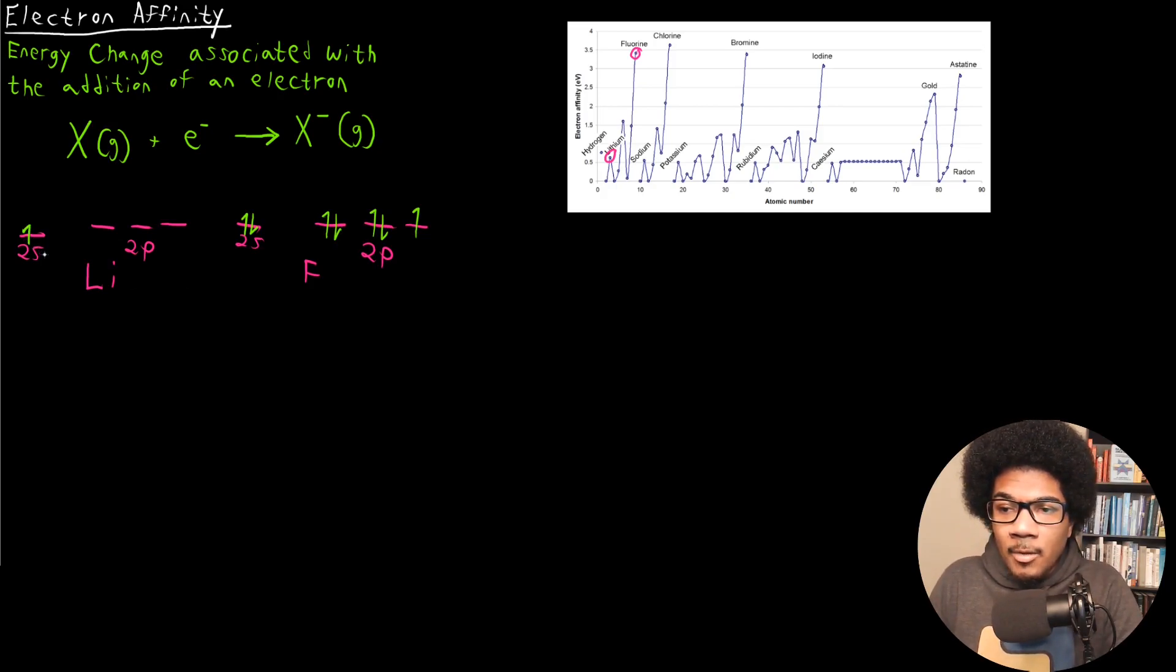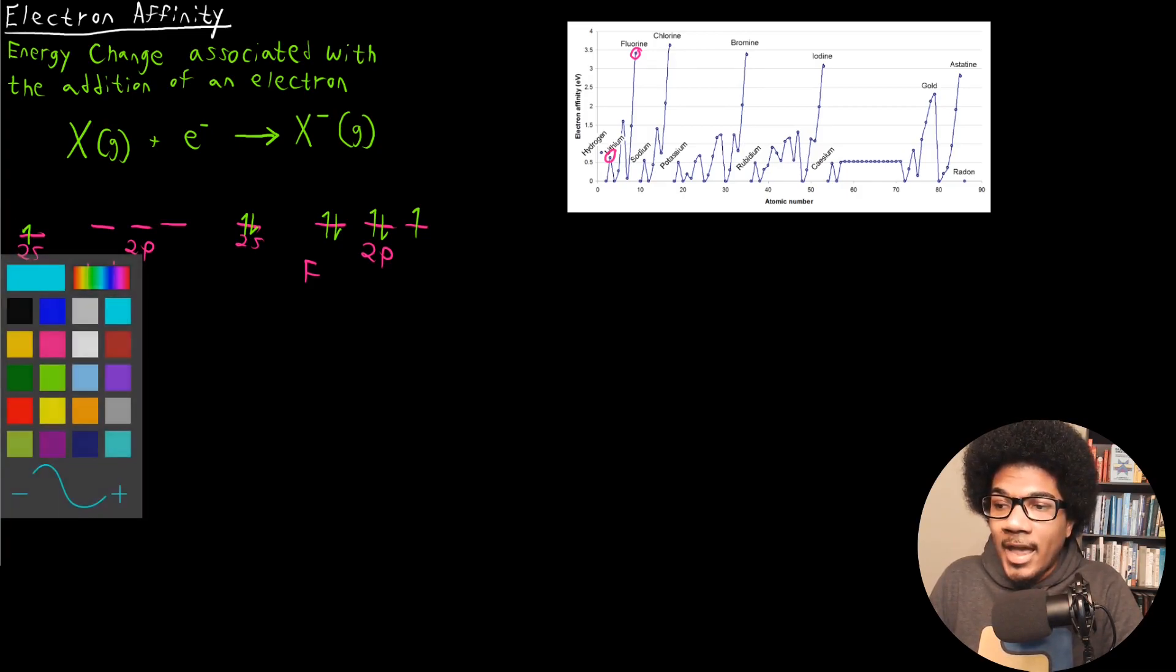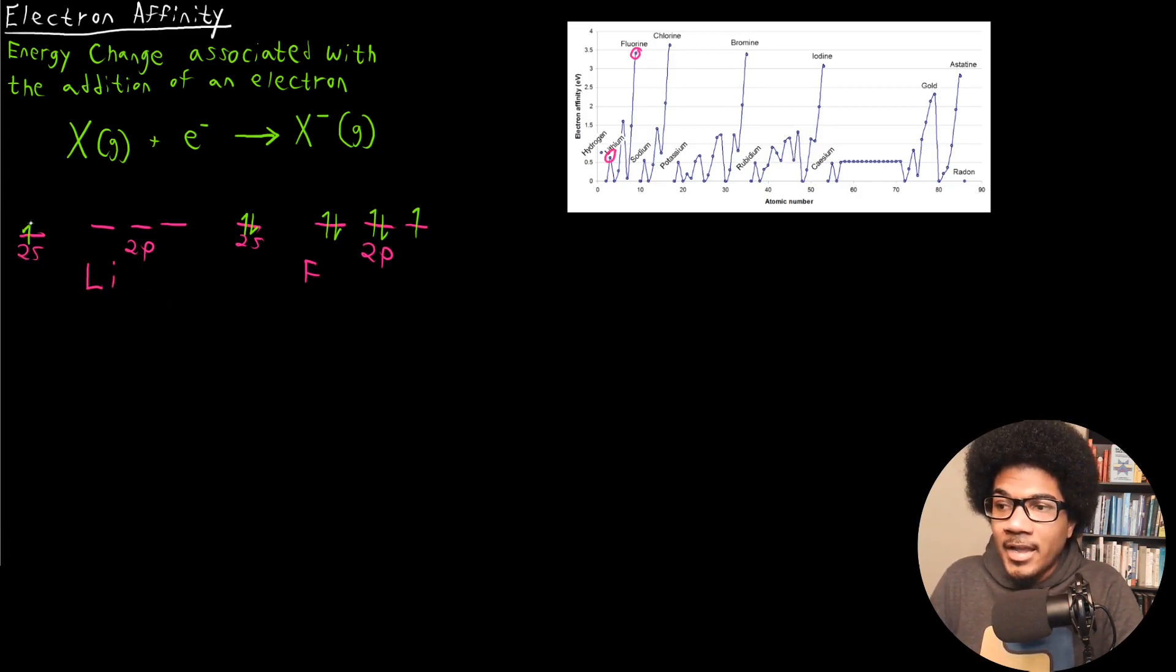Now we want to think about where would the electron go if we were to add one electron to form the anion. For lithium that electron would go into 2s, pairing with that guy to form the anion, and for fluorine it would go here into 2p to form this anion.